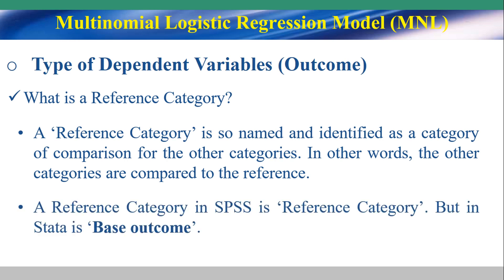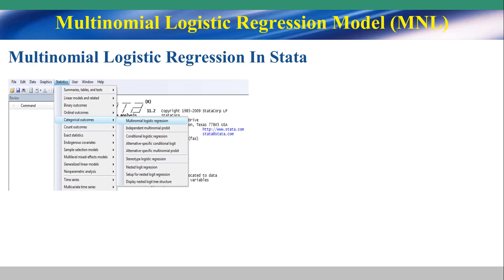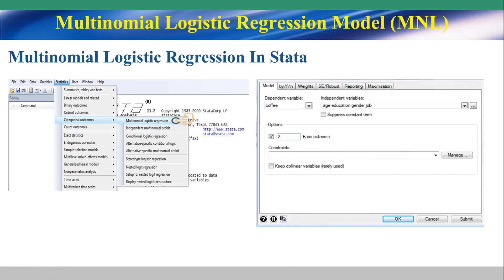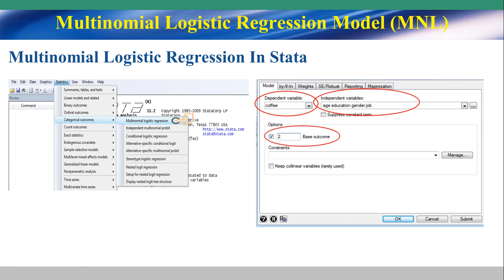A reference category in SPSS is labeled as reference category, but in Stata it is called base category. In the diagram, the path on the right is the dependent variable, the path on the left is the independent variable, and one path is designated as the base or reference category.